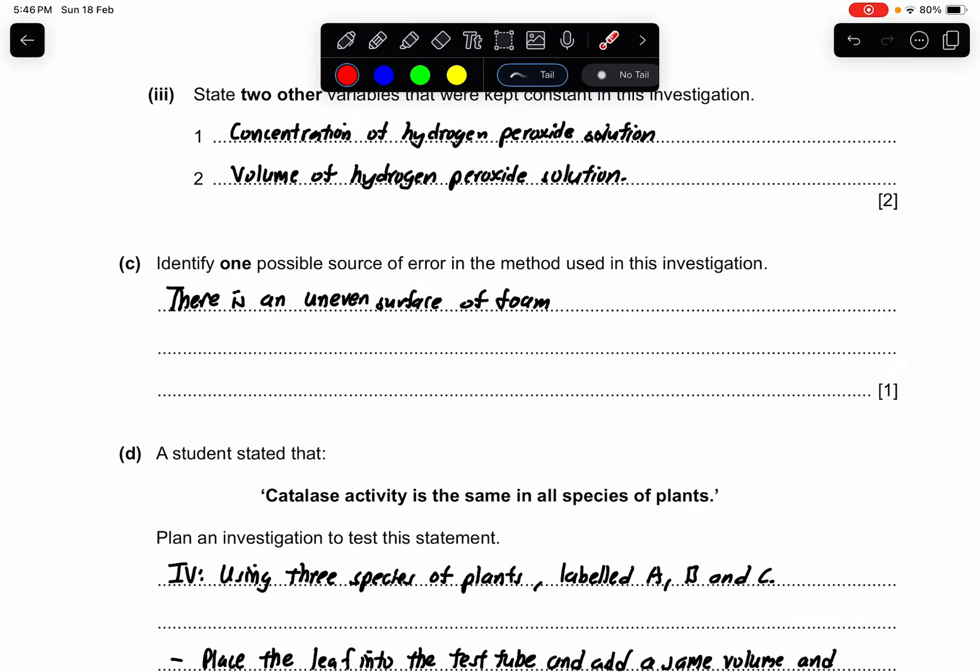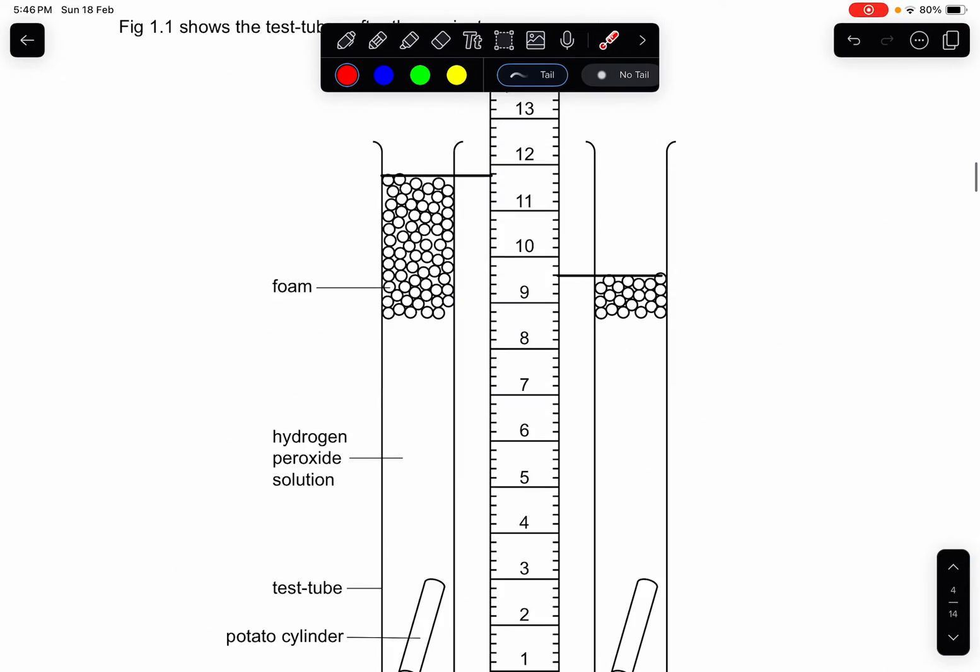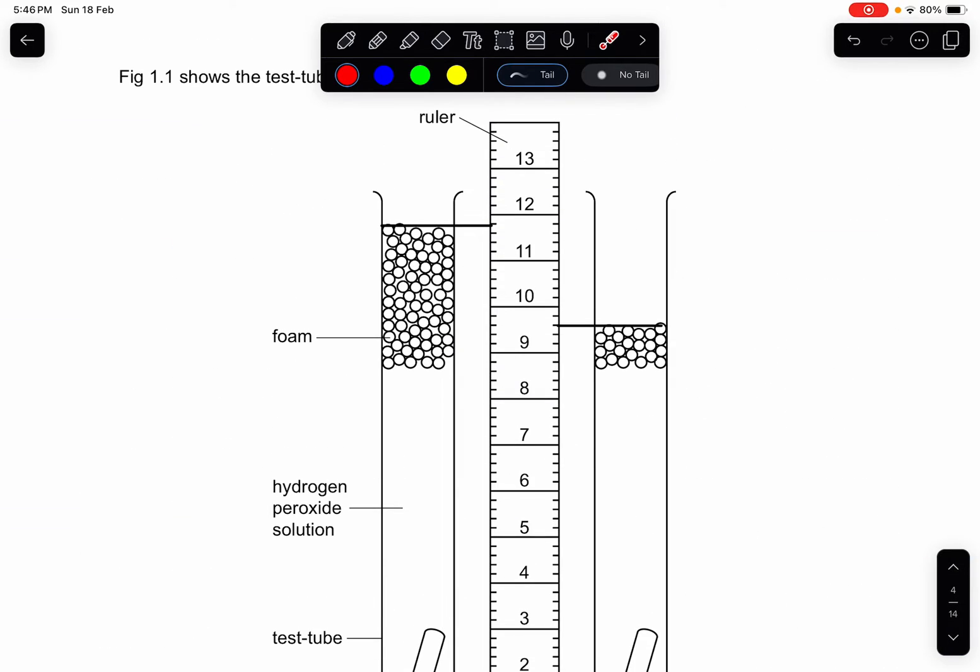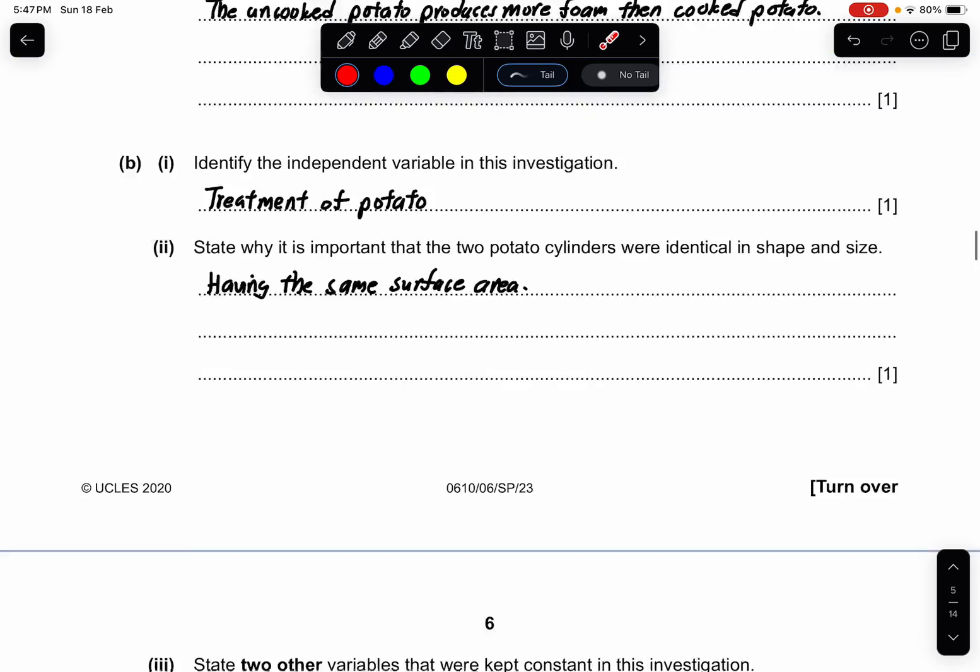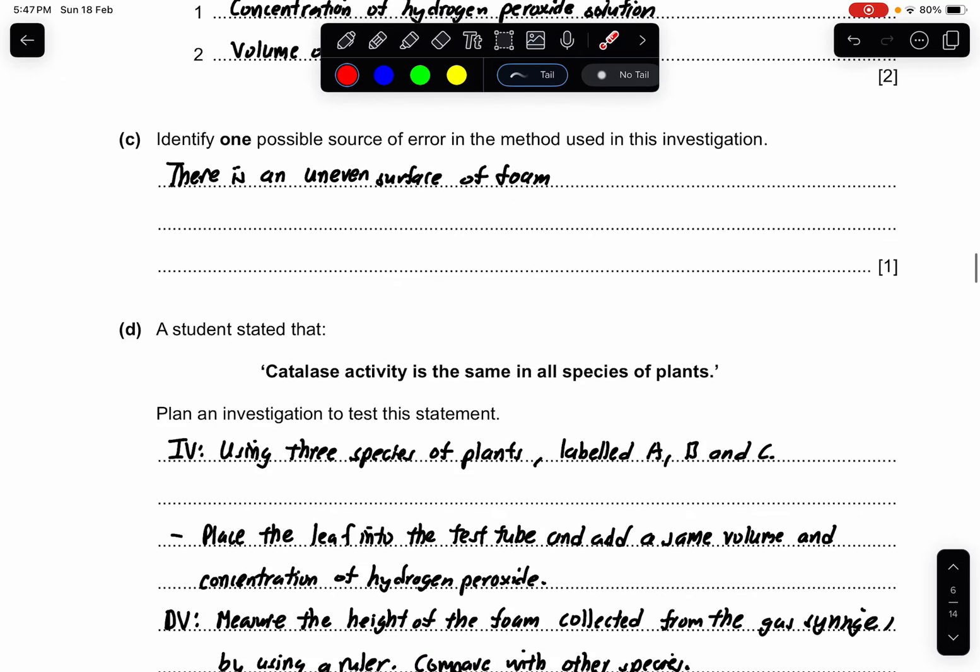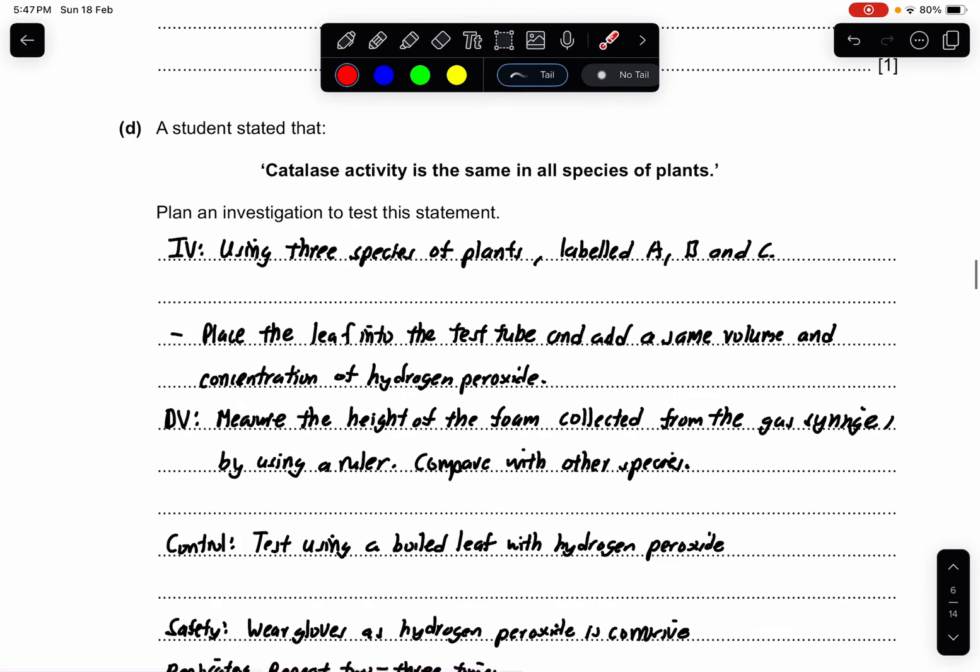C: identify one possible source of error in the method used in this investigation. Throughout this investigation, even when you are measuring, you can see that the foams are uneven. And that is a source of error because they can give a little measurement difference with some of the holes because the foam is at a different position or so. So this is one of the answers.